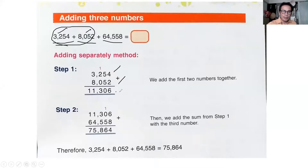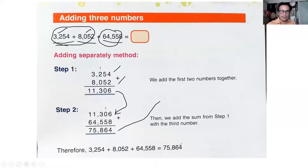After you get the answer, you copy it down. Step two: copy the same answer and then add the third number. Six plus eight is fourteen, carry one. One plus five is six, three plus five is eight, one plus four is five, one plus six is seven. This is the final answer.